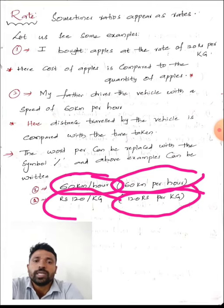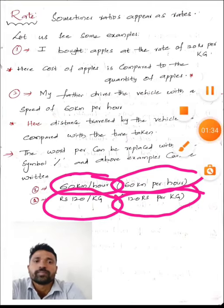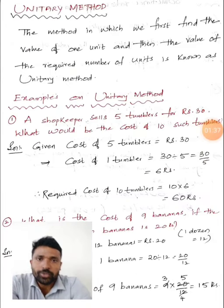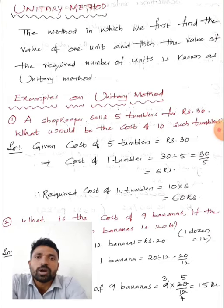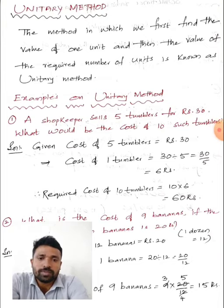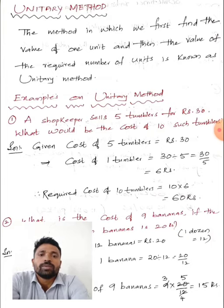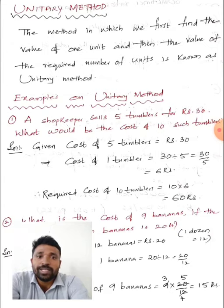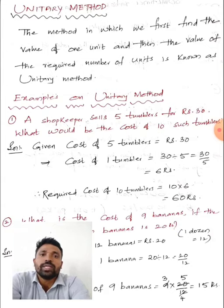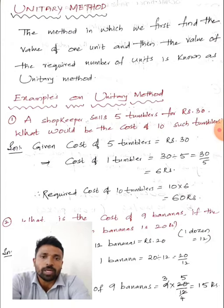Now the other topic is the unitary method. As the name suggests, 'unit' means one. In order to find the required number of units, first we have to find the value of one unit, then multiply that by the required number of units. The method in which we first find the value of one unit and then the value of the required number of units is known as the unitary method.